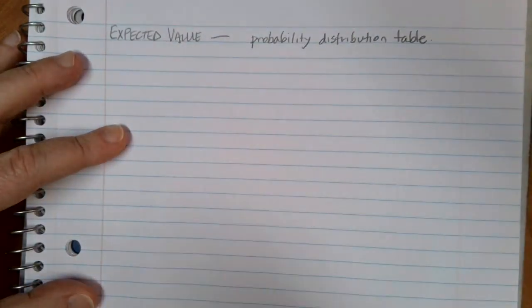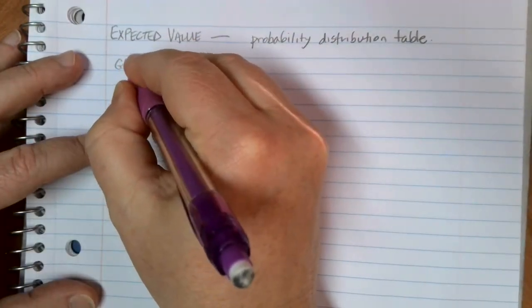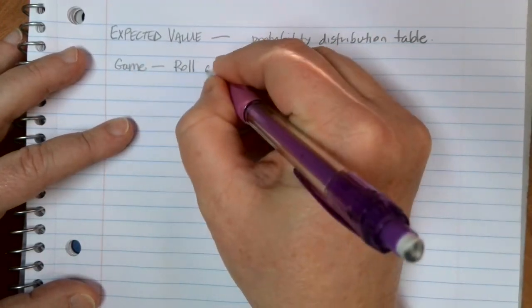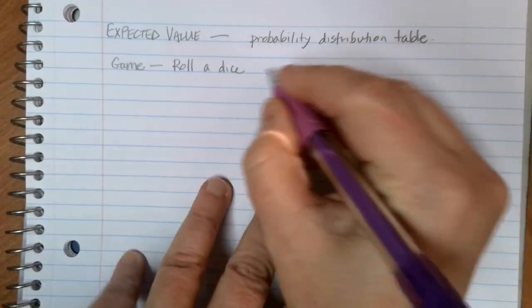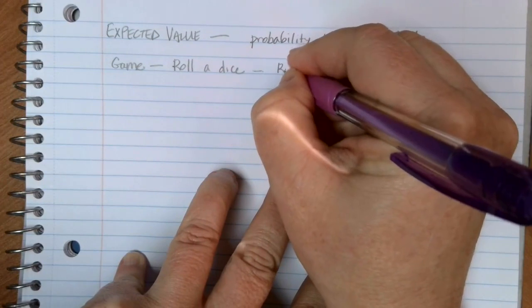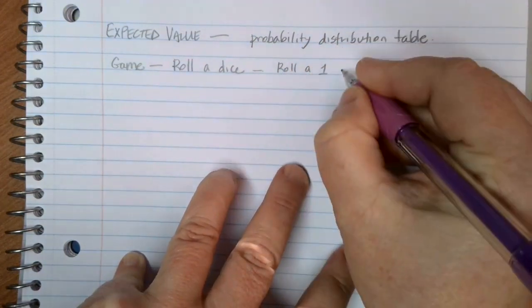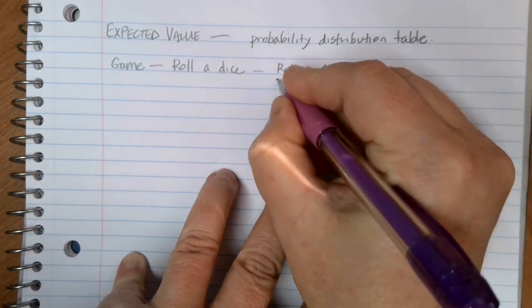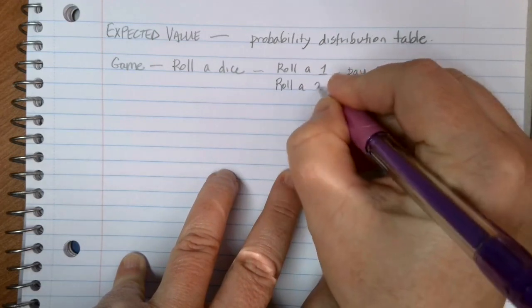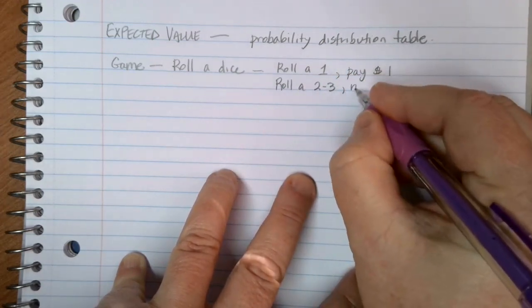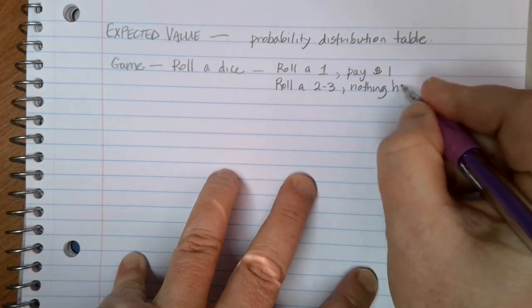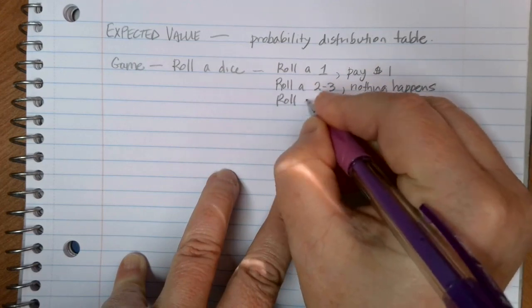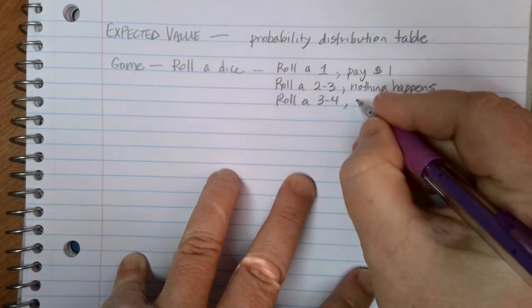Suppose that we have a game. And in this game, we're going to roll a dice. If we roll a one, we need to pay one dollar. If we roll a two or three, nothing happens. If we roll a three or four, we get one dollar.